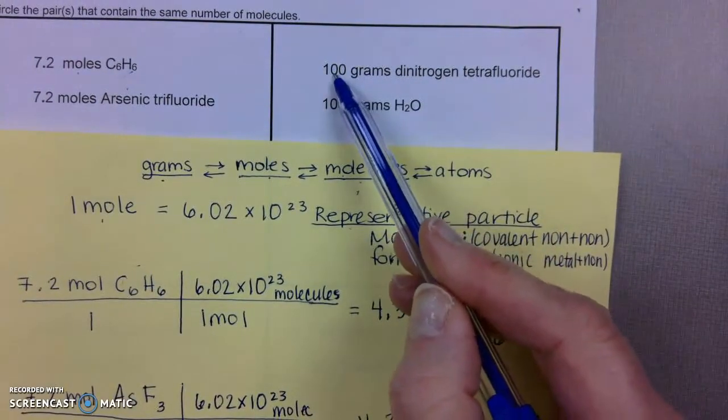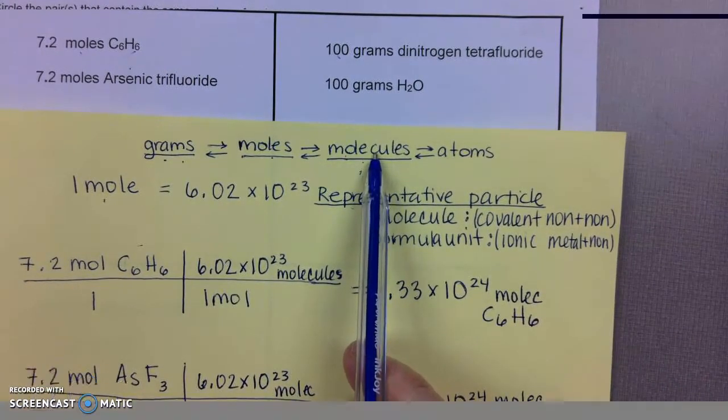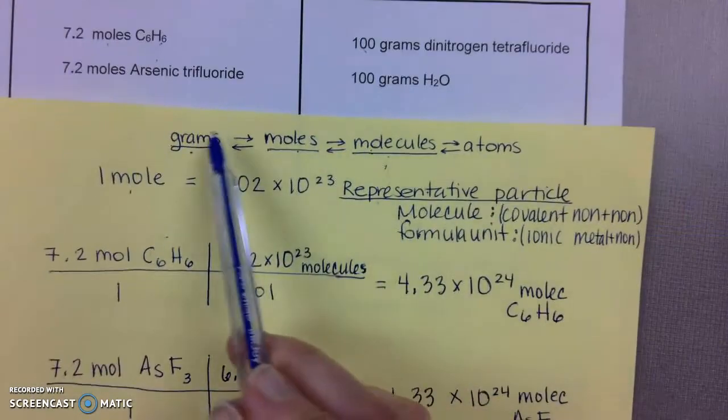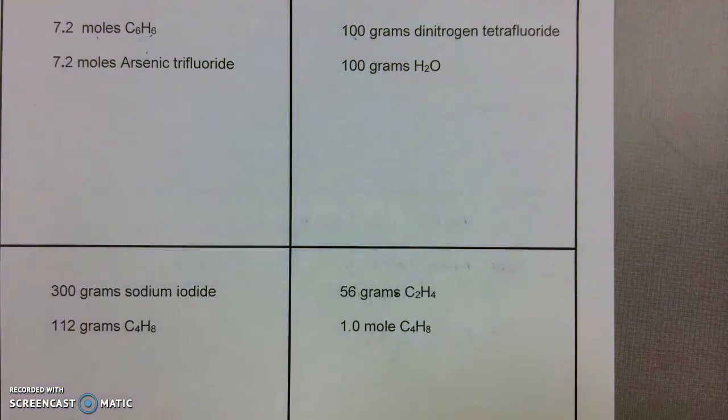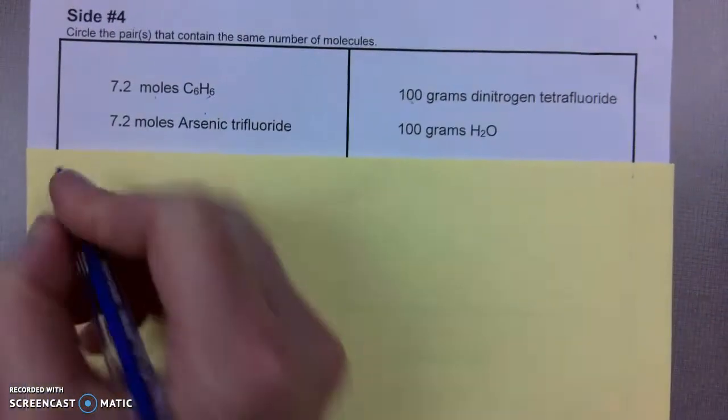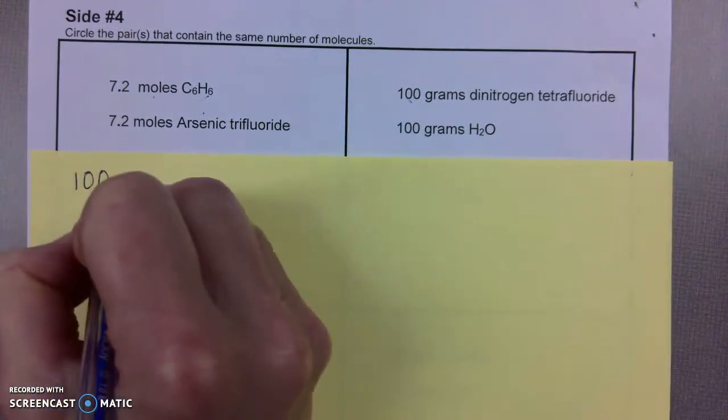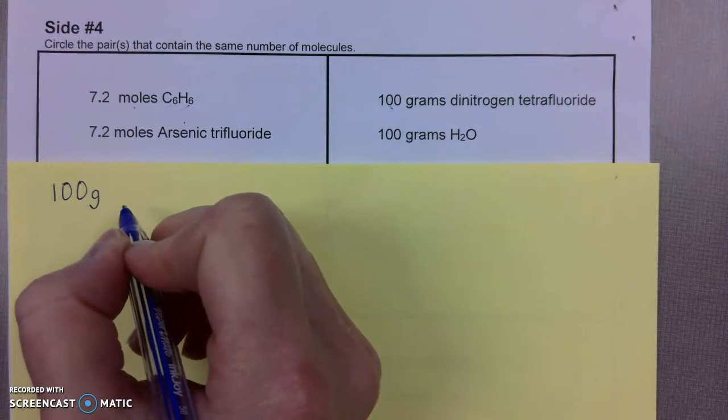Well, let's see what happens when we start with grams and we want to convert to molecules. So I'm starting with grams. We're going to do this first one right here. Flip the page over. I'm starting with 100 grams, and it's dinitrogen tetrafluoride.